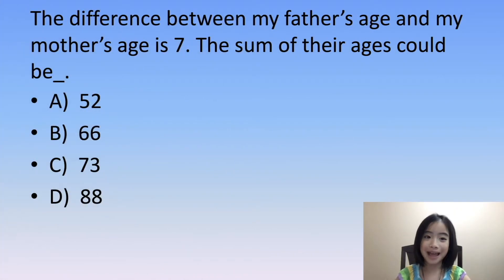Now let's go back to our question. We know that the difference between my father's age and my mother's age is seven. Seven is an odd number.